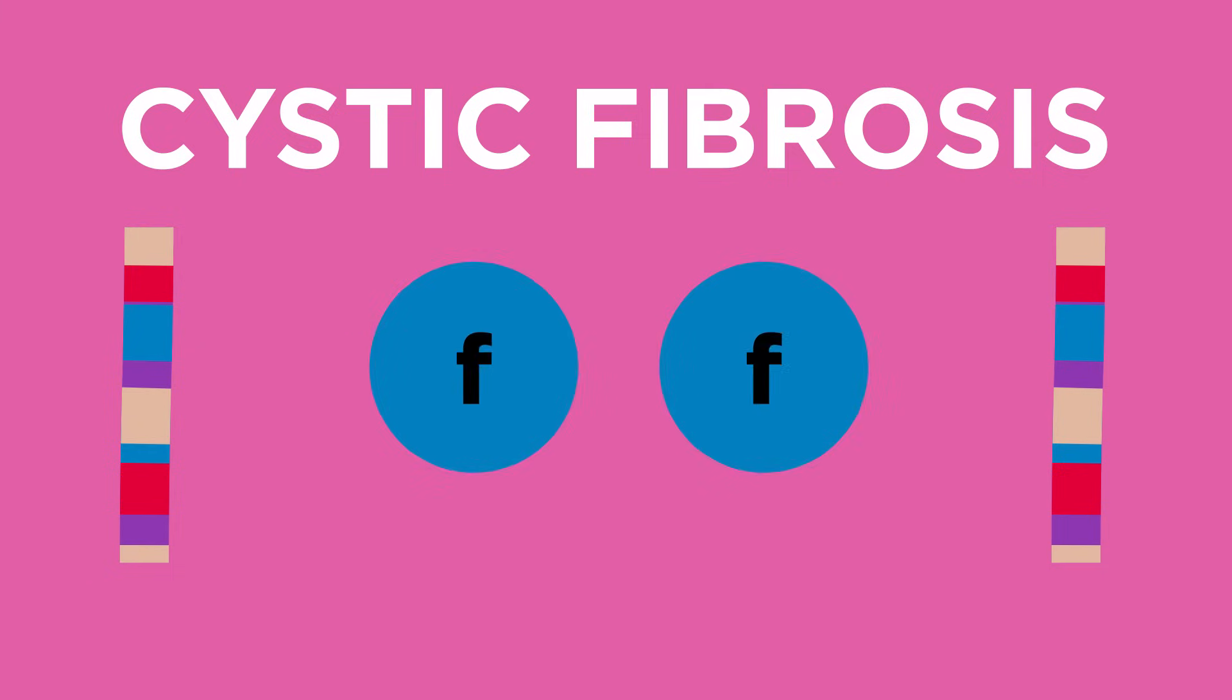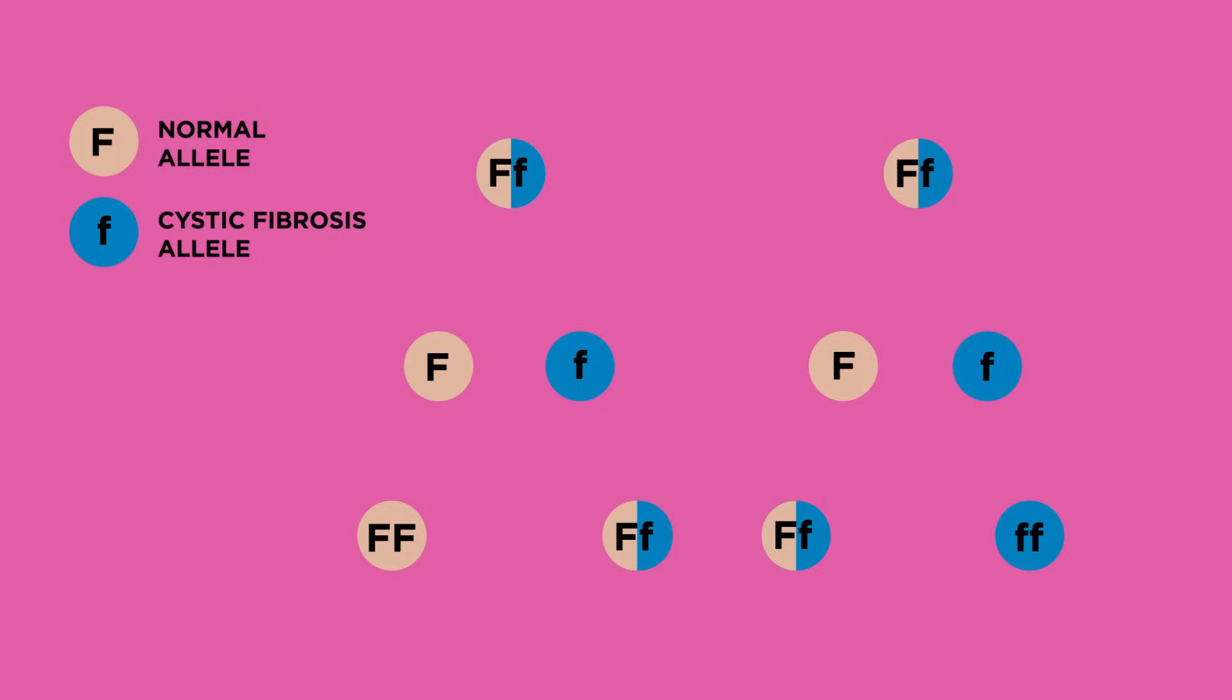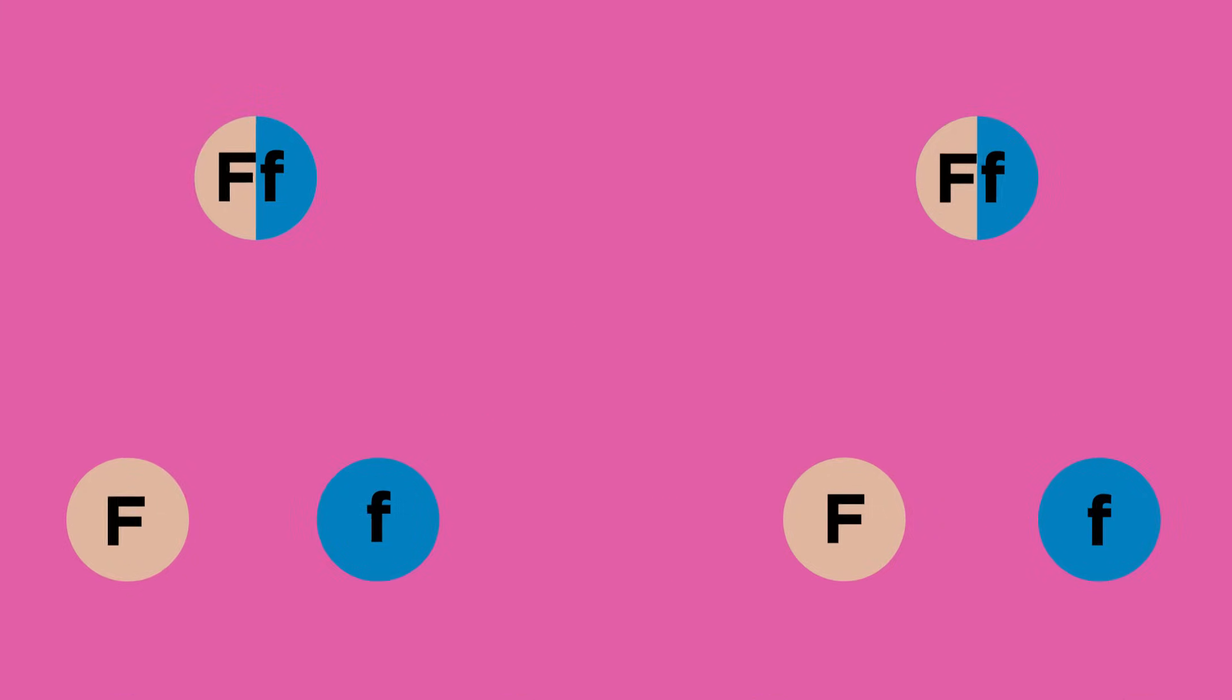Cystic fibrosis is inherited in a different way to polydactyly. Take a look at this genetic diagram and see if you can figure out how it is different. To have cystic fibrosis you have to inherit two recessive alleles.